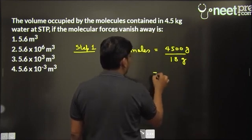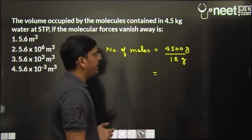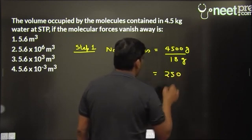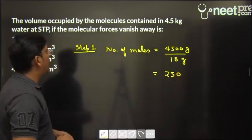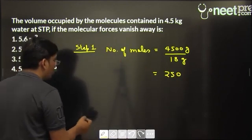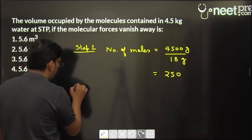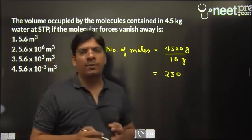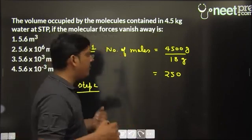So this comes out to be 4500 divided by 18 would be 250. Yes, it would be 250 moles of water. Now you know that molar volume, gram molar volume or just the molar volume, volume occupied by one mole of gas or water vapor at STP is 22.4 liters.